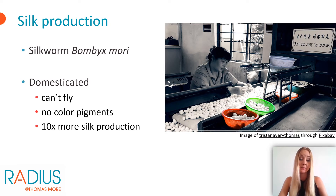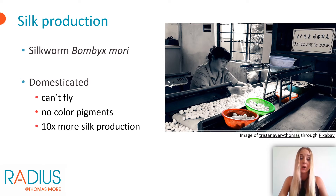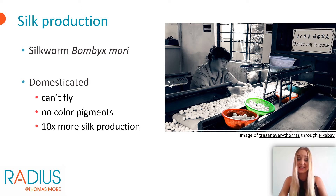One of the oldest examples in which humans grow insects for their beneficial properties is silk production. For this, the silkworm Bombyx mori is bred. The moths lay eggs in a controlled manner and as soon as the first larvae hatch, they are transferred to a bed of mulberry leaves. Larvae that are ready to pupate start to spin and are placed in a frame. When all pupae are formed, they are harvested and silk can be extracted. The silkworm has been domesticated for over 5,000 years, resulting in the moth no longer being able to fly and having no color pigments. In addition, the silk production of the domesticated breed is 10 times higher.